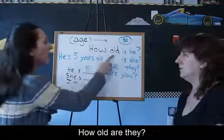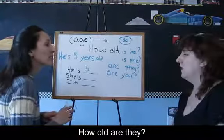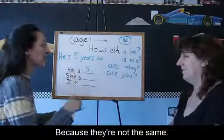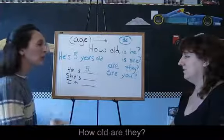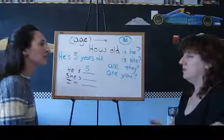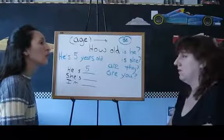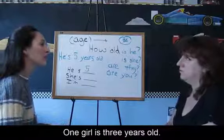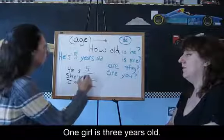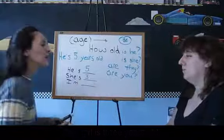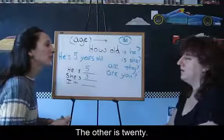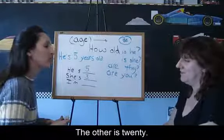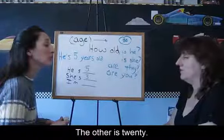You have two daughters. Yes. How old are they? Well, because they're one and the other, because they're not the same. One girl is three years old. The other? She is... She's twenty. Twenty, she's older.